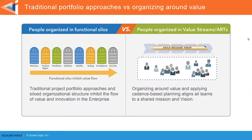In most organizations, even those doing agile development, people are still organized in functional silos. The problem is that each silo has different goals that aren't always aligned, and passing work from one functional silo to the next causes delays and escalations. We need to organize people in value streams so that we are optimized for value delivery, with cross-functional agile teams and cross-functional agile release trains — critical for getting the speed we need in today's disruptive world.